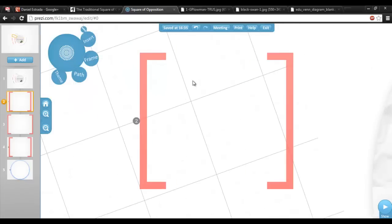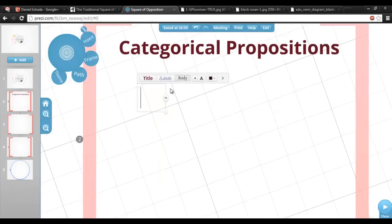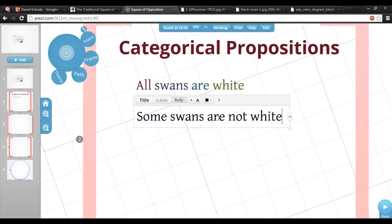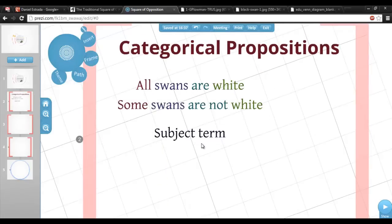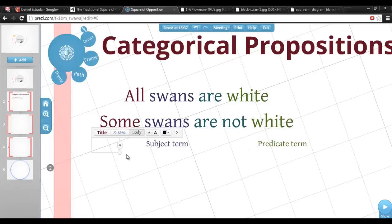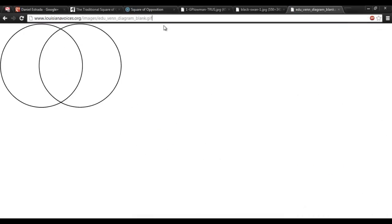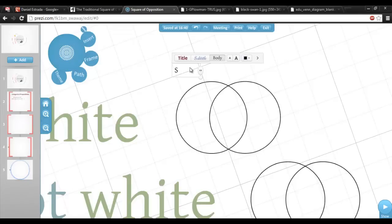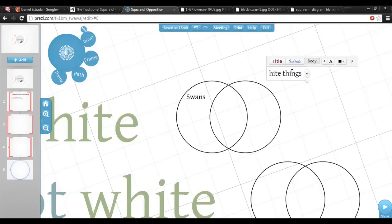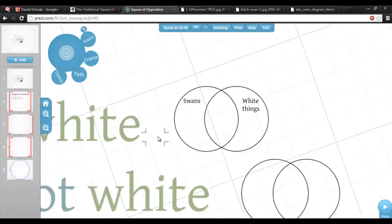Let's look at how these sentences work. In standard form, a categorical proposition will have two terms that name two categories of things. One term is called the subject and the other is the predicate. A categorical proposition makes a claim about the relationship between these two categories. You might have learned to deal with these kinds of sentences using Venn diagrams, where you draw circles to label the different categories, and then you shade in parts if it's empty, or you put an X in if something is there.